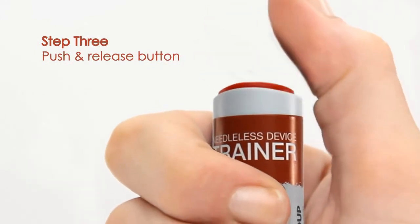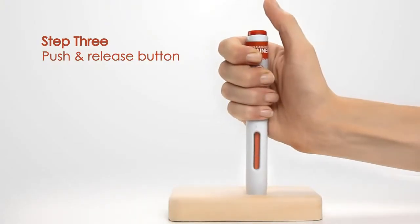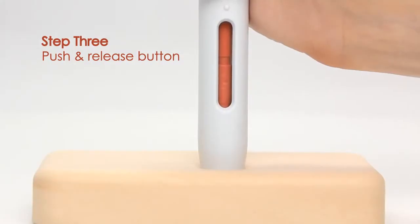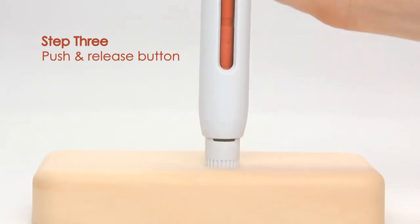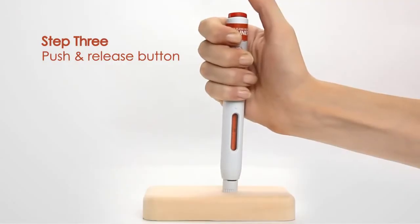Step 3: Push and release the activation button at the top of the device to simulate delivery. There will be two audible clicks. The viewing window will change color and the needle cover will extend, just like a real device.